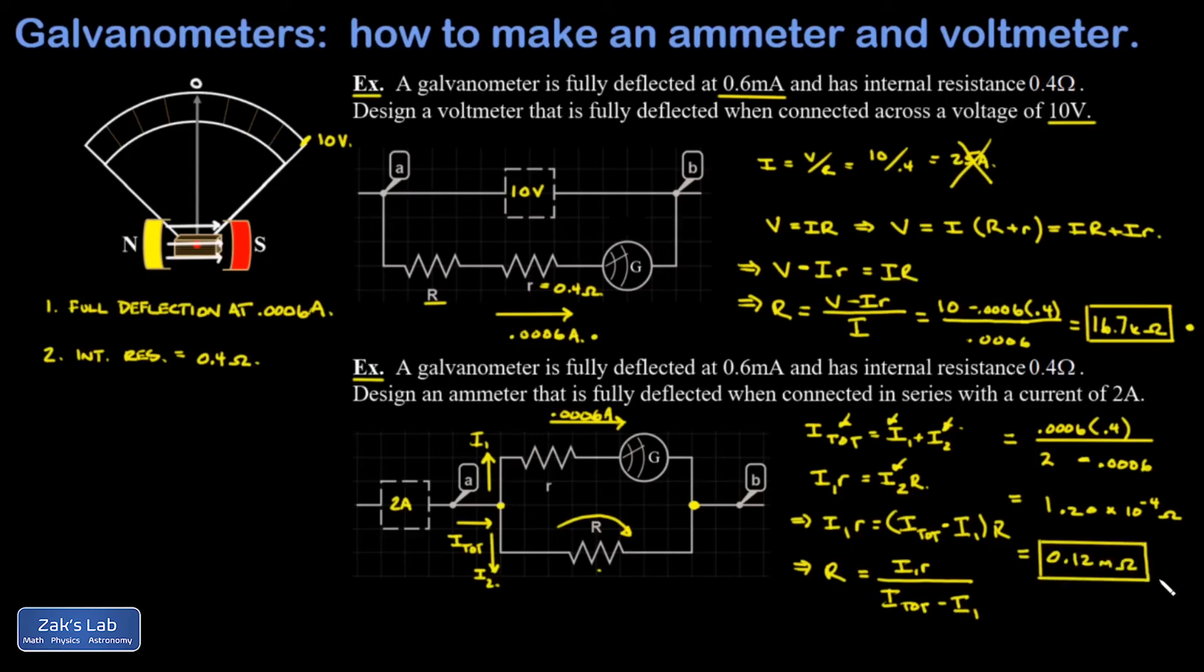A final comment on our ammeter design: ammeters always come with a very tiny resistance in parallel with the galvanometer branch, and this makes it so you have a minimum amount of interference with your circuit. Because R is very small, 0.12 milliohms, the potential difference across our ammeter is guaranteed to be really small. Our goal is to study the circuit without modifying it too much.